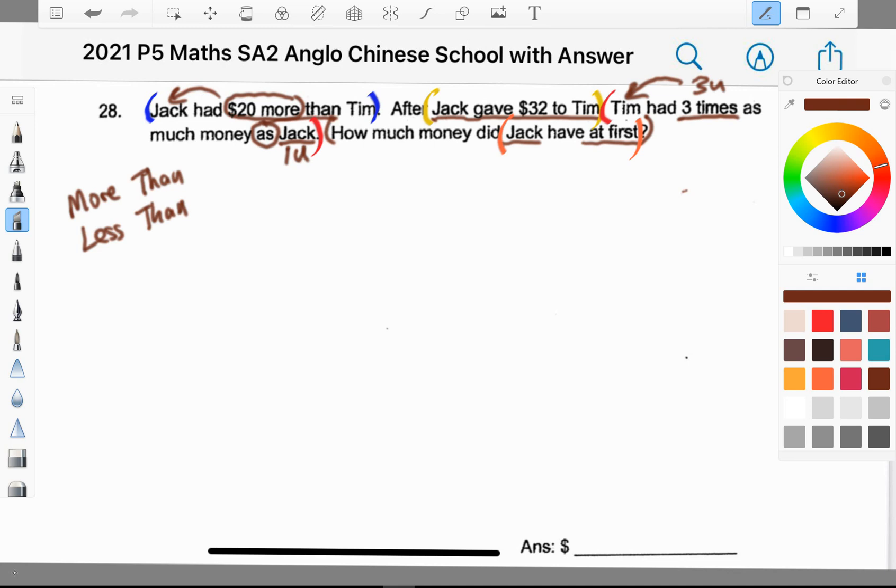Now I'll go into the model drawing. Model drawing is very simple. I got to use pencil. I shouldn't draw the model too near to my question because I will need some working space. I've not been using the ruler to draw models for the last 16 years. You don't need a ruler, you can just get it done easily, freehand. Just ensure that your rectangle looks like a rectangle. In my question, they say Jack had $20 more than Tim, so I'm going to show that.